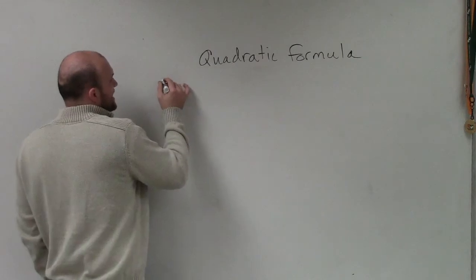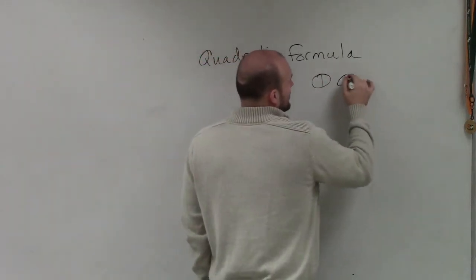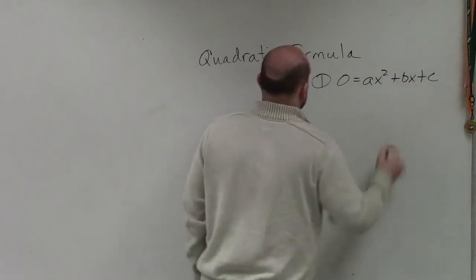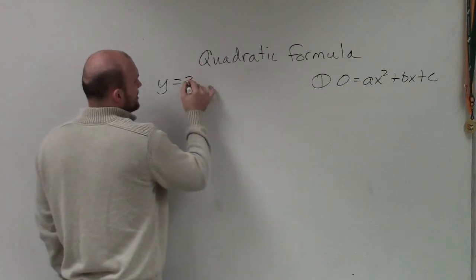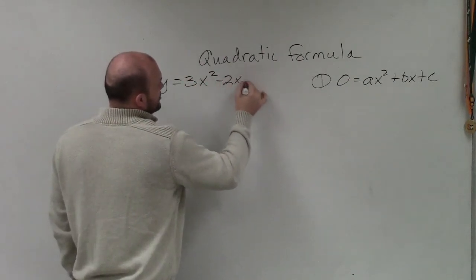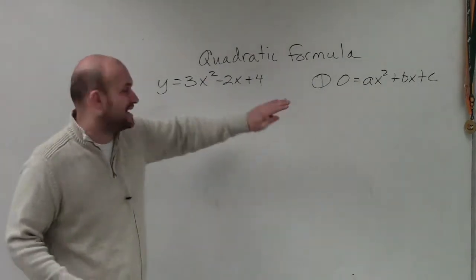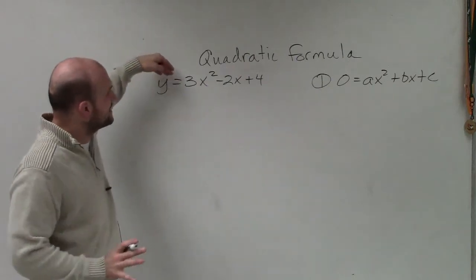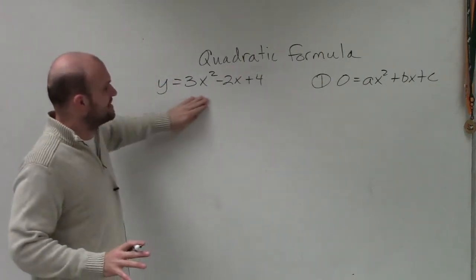The main important thing is we need to have something in quadratic form, which means 0 equals ax squared plus bx plus c. So if I have an equation y equals 3x squared minus 2x plus 4, I want to make sure it's set equal to y, and therefore I can set this equal to 0 so it's in standard form.